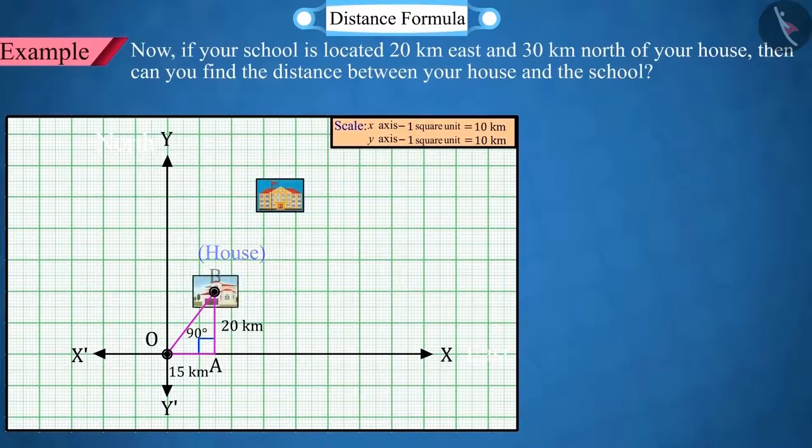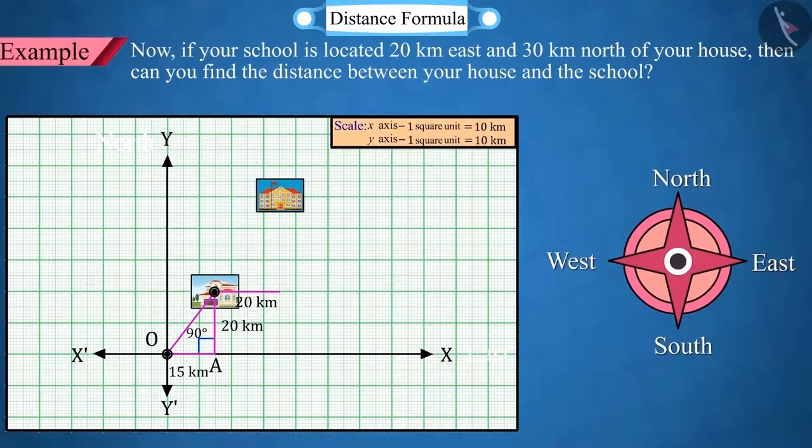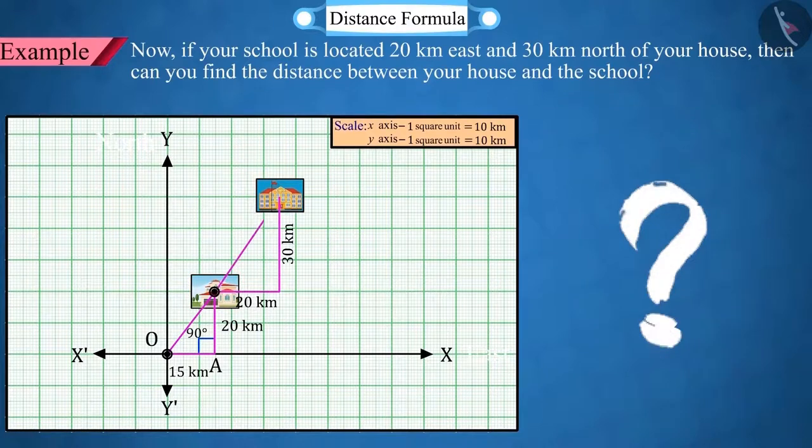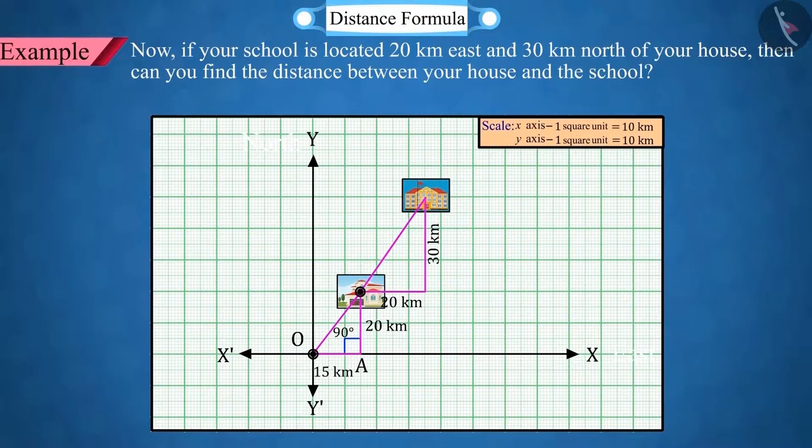Now, if your school is located 20 km east and 30 km north of the house, then can you find the distance between the house and the school? Let's solve this together.